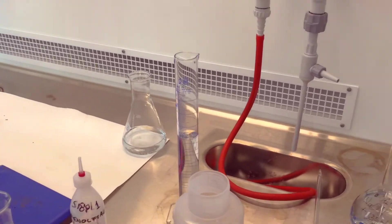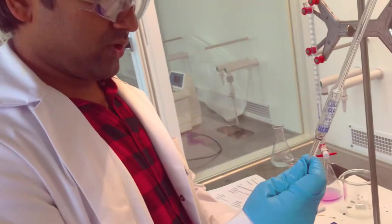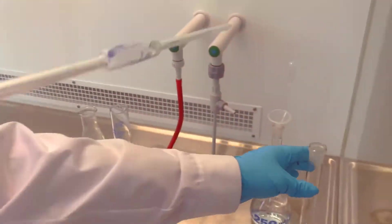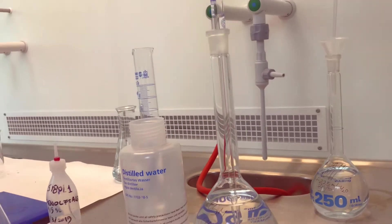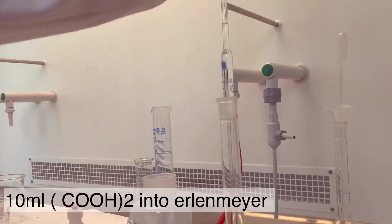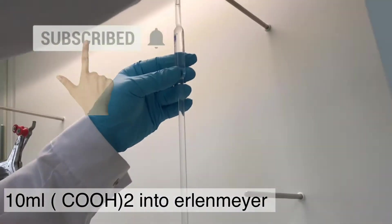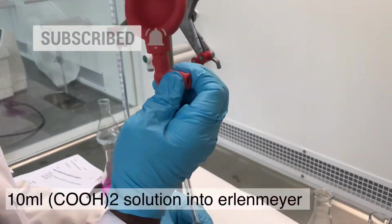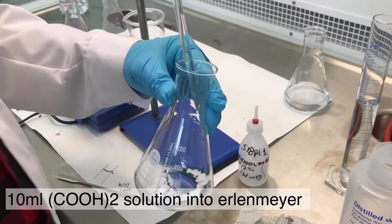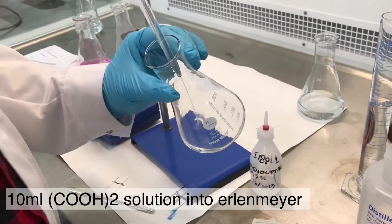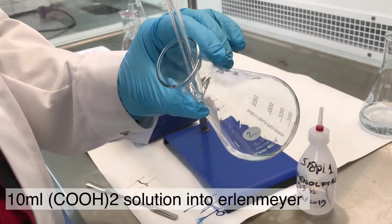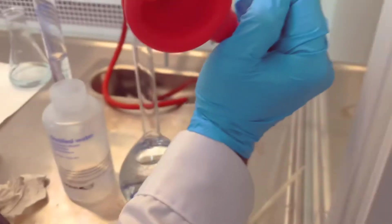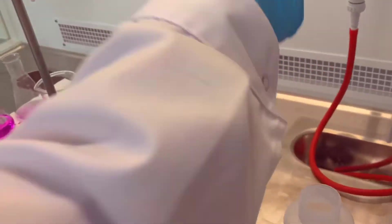Now I'll take this one and show you how I make the solution. I take 10 milliliters of oxalic acid solution. I drop here 10 milliliters of oxalic acid, and then I take 70 milliliters of water.